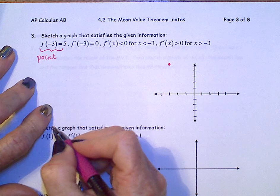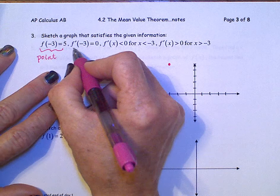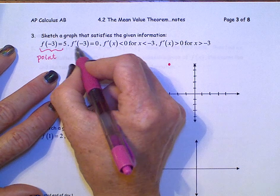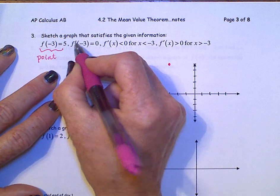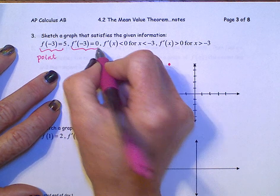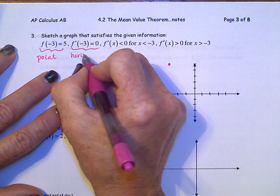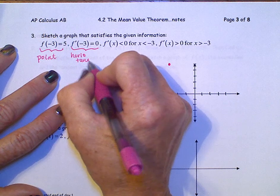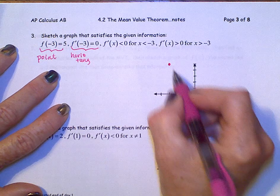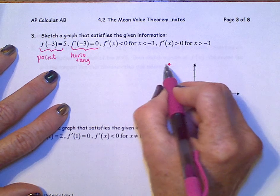f prime at negative 3 is equal to 0. f prime is slope of a tangent line. So this bit right in here tells us that we have a horizontal tangent. And I can put in a little baby horizontal tangent in here.